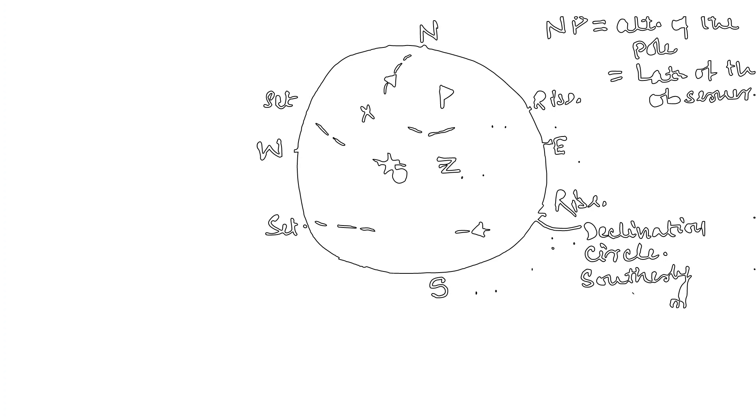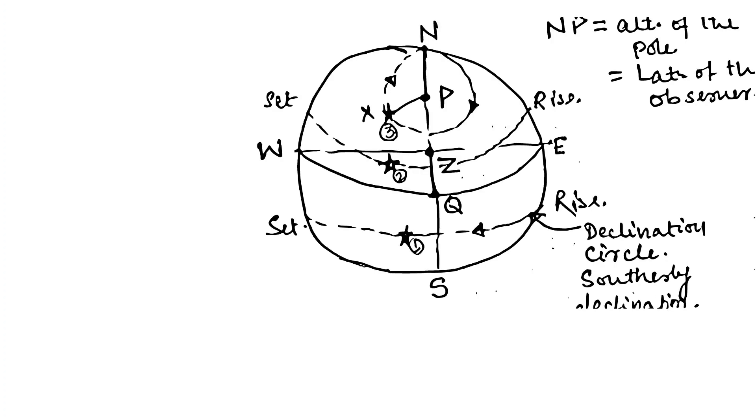Let's assume the observer's latitude is 40 degrees north. In this picture you can see NP is the altitude of the pole, which is equal to the latitude of the observer.